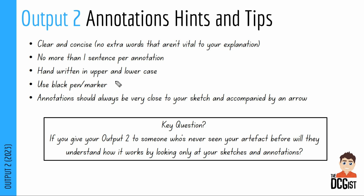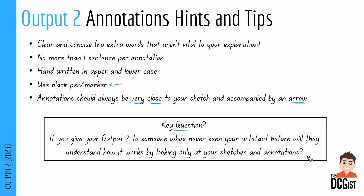Use a black pen or marker. What a lot of people do is write it in pencil first, then go over it in black pen and marker at the end — that gives you the opportunity to do your layout and make mistakes with spelling or arrangement, then finalize it with your pen. Annotation should always be very close to your sketch and accompanied by an arrow pointing at a particular point. You don't want someone wondering whether an annotation belongs to sketch one or sketch two. The key question to ask yourself is: if you give output 2 to someone who's never seen your artifact before, will they understand how it works by looking only at your sketches and annotations? If the answer is yes, then you've done a really good job.